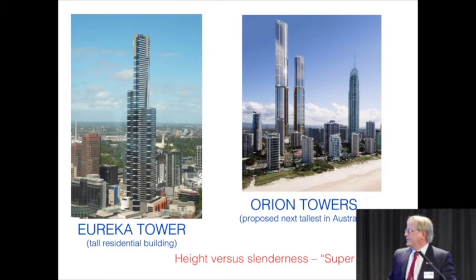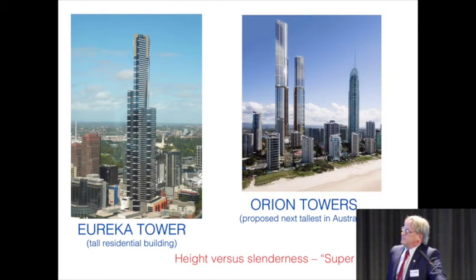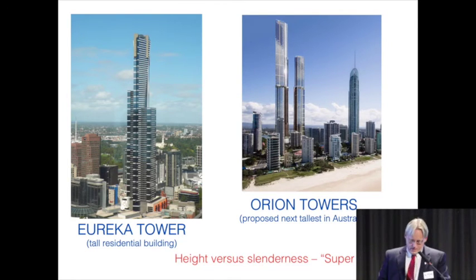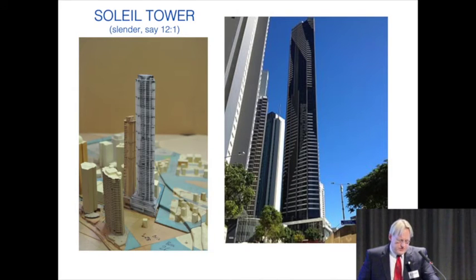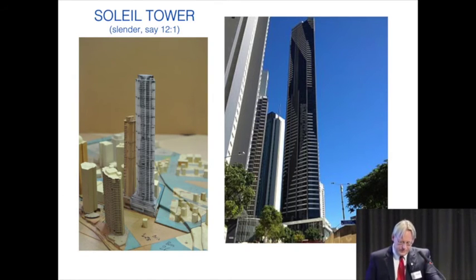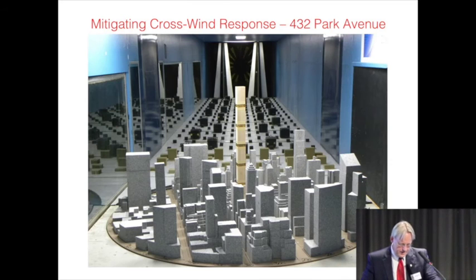Australia has some quite tall buildings by local standards. I want to discuss what are sometimes called 'super skinnies' or high-aspect-ratio buildings. There is a 103-storey proposal on the Gold Coast — reasonably slender and currently in the wind tunnel. The Ciél building in Brisbane is approximately 12-to-1 aspect ratio and is the building with a tuned liquid column damper. And 432 Park Avenue in New York — which stands out dramatically on the skyline — is the one building everyone talks about.